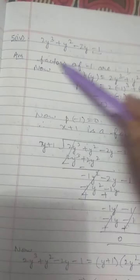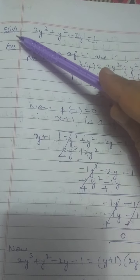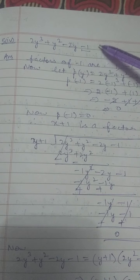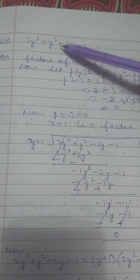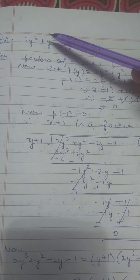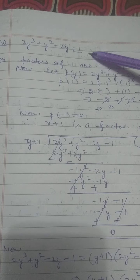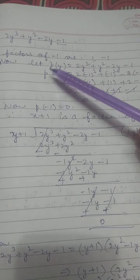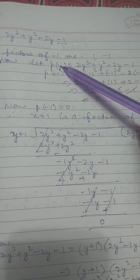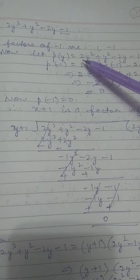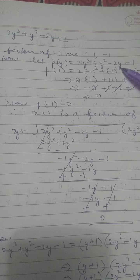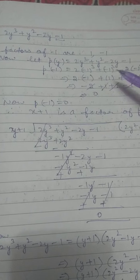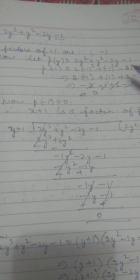Now the last fifth question, fourth part: factorize 2y cube plus y square minus 2y minus 1. The factors of minus 1 are plus 1 and minus 1. Let p(y) be the polynomial 2y cube plus y square minus 2y minus 1.